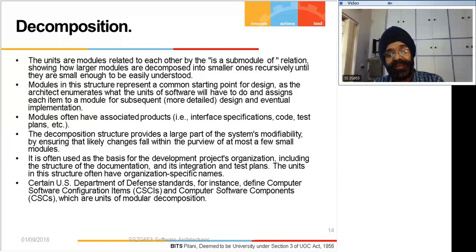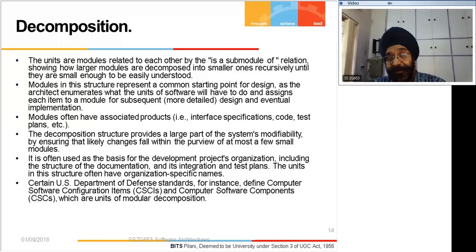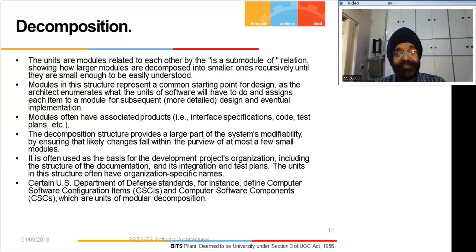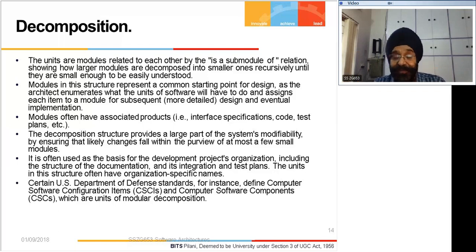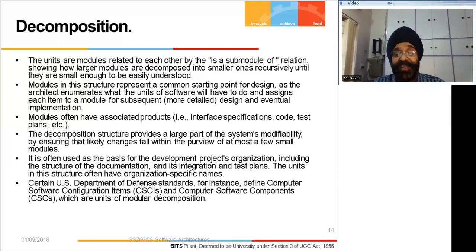Now going through individual module structures - the first is decomposition structure. When you divide into modules you will have interface specifications, and there will be more concentration on that during component and connector view. Good decomposition supports modifiability - loose coupling is a fundamental principle of design. A software architect is very well aware of the pitfalls of high coupling. At module level you would like to have minimum interaction between modules.